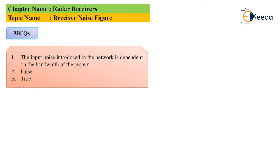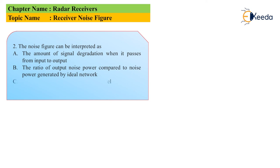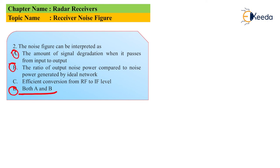MCQ 2: 'The noise figure can be interpreted as...' Option A: the amount of signal degradation when it passes from input to output. Option B: the ratio of output noise power compared to the noise power generated by the ideal network. Option C: efficiency conversion from RF to IF level. Option D: both A and B. From the noise figure equation we have two interpretations — options A and B — so the correct answer is D, both A and B.